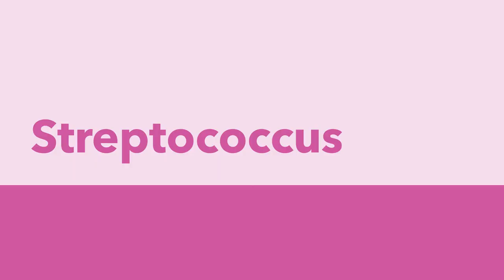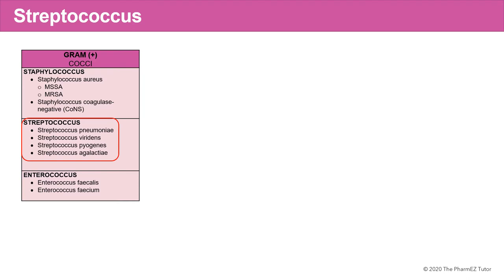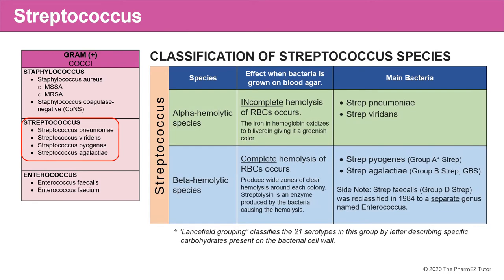We've now completed our discussion about Staphylococcus and we're going to move on to discuss Streptococcus. Streptococcus is the second main group under gram-positive cocci, comprised of four important species. How do we classify Streptococcus species? They're either alpha-hemolytic or beta-hemolytic, depending on what effect the bacteria has when grown on blood agar, which helps us further differentiate the Streptococcus species.